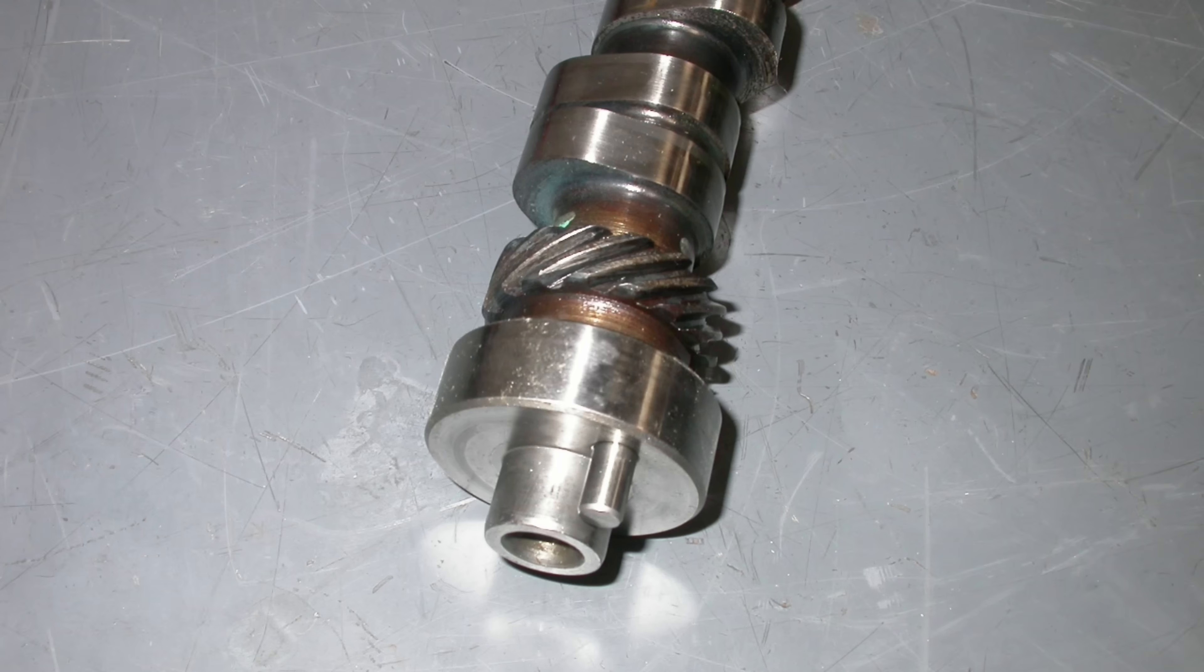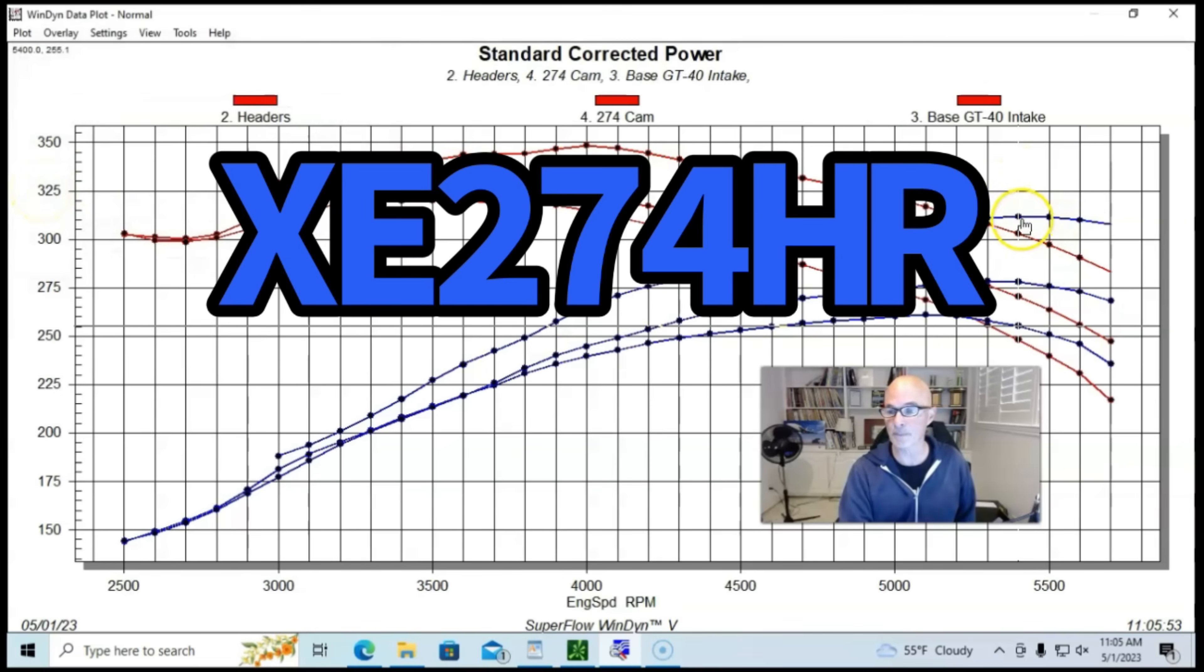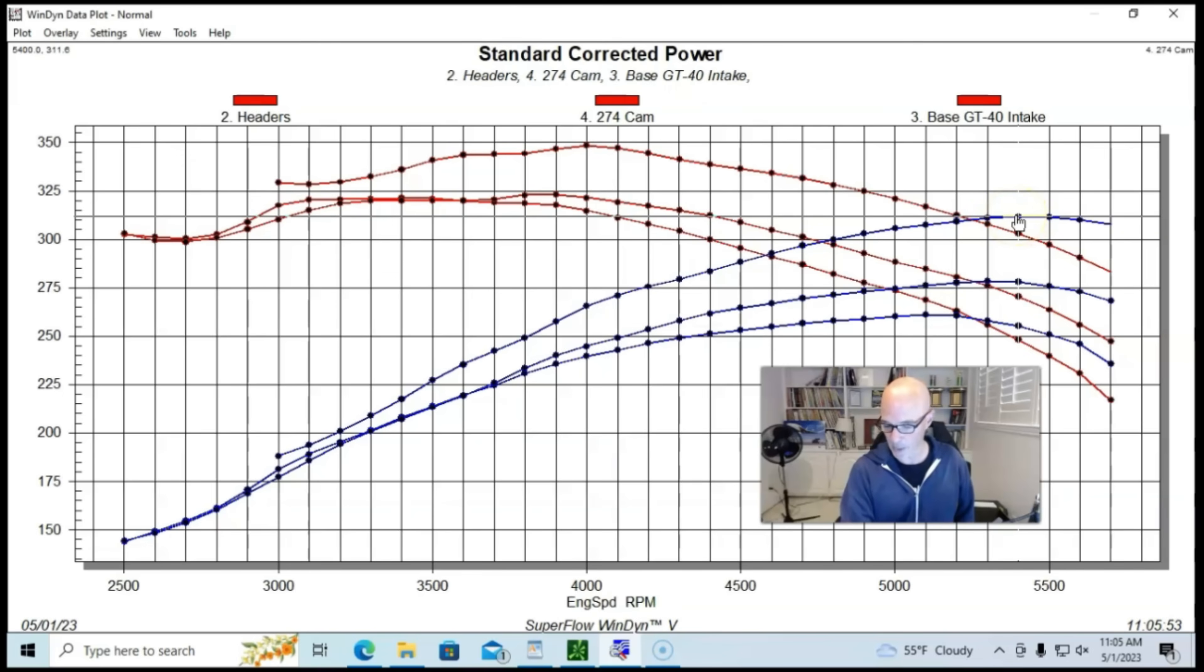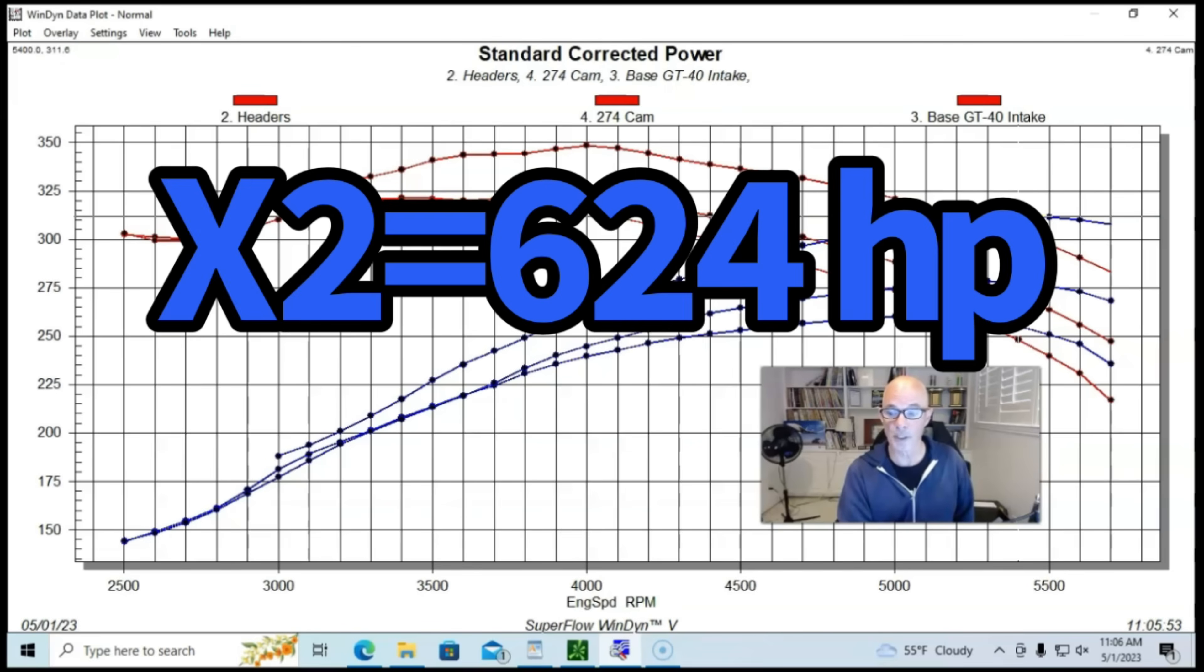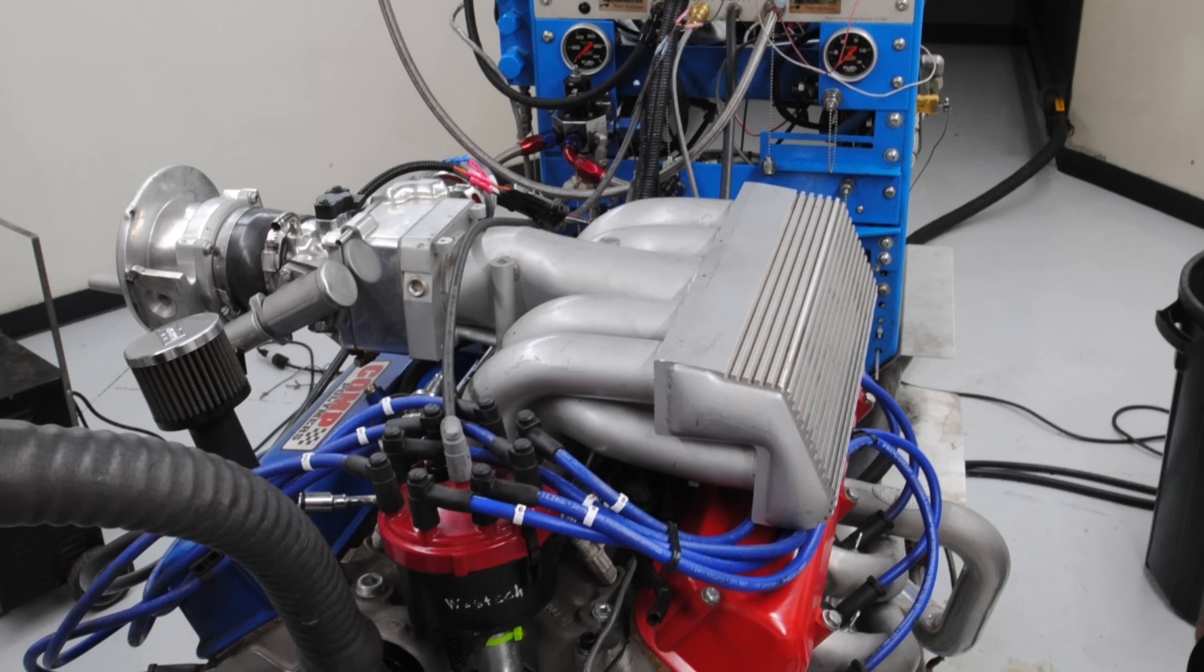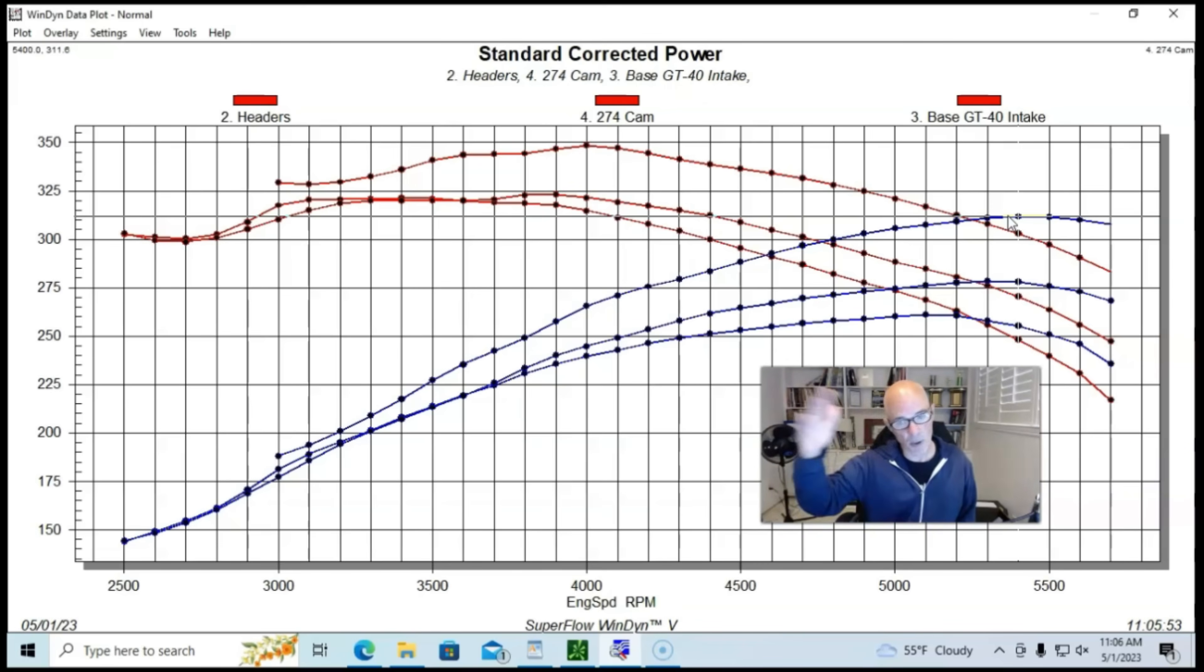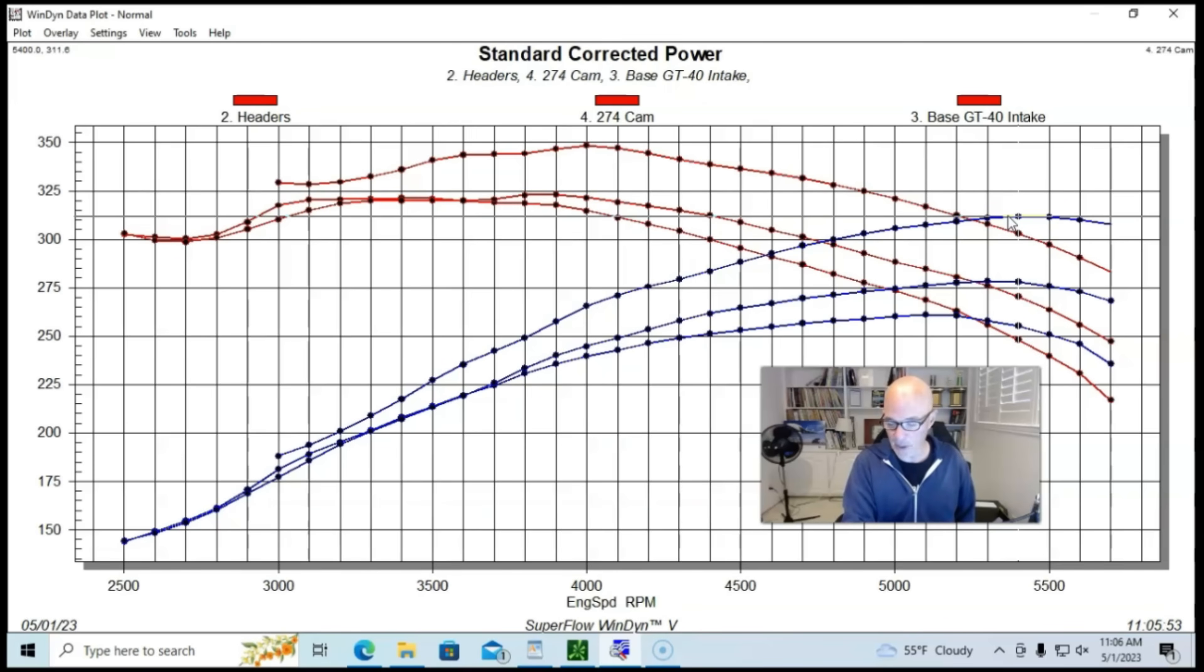So the next thing we did was install a camshaft. This was the Extreme Energy 274 cam on our 5 liter. Peak power went up to 312 horsepower. So if we double that, we get 624 horsepower. So if you ran a cam and a GT40 on your stock motor, you would pick the power up quite a bit, but under boost, it gets multiplied, so the gains are even greater. 624 horsepower at 14.7 pounds and 468 horsepower at 7.3 pounds. We're starting to make some fairly decent power, especially under boost.